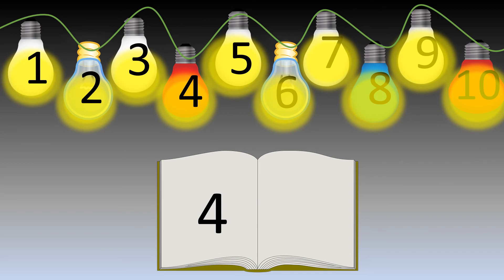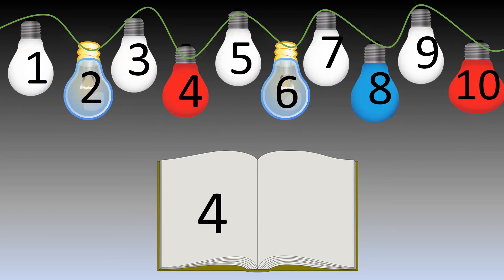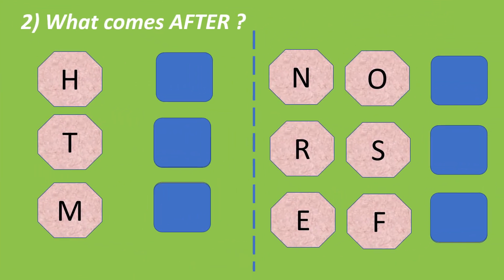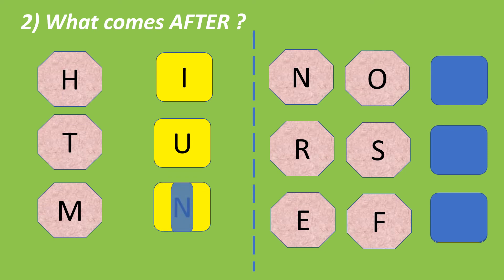Which number is after number 4? Yes. It's number 5. So, our last quiz is what comes after? Letter. First is letter H. So, after H is I. What comes after T? It's U. What comes after M? It's N.